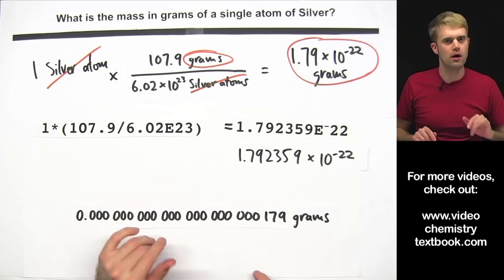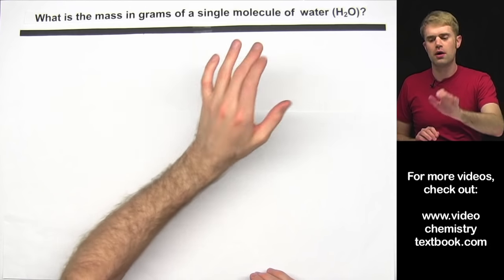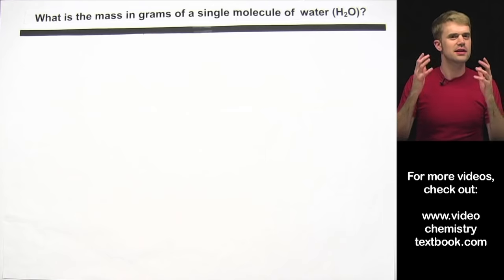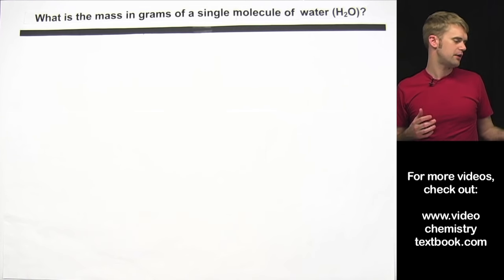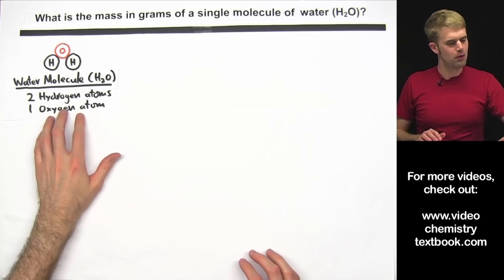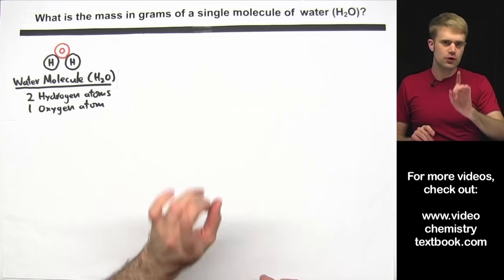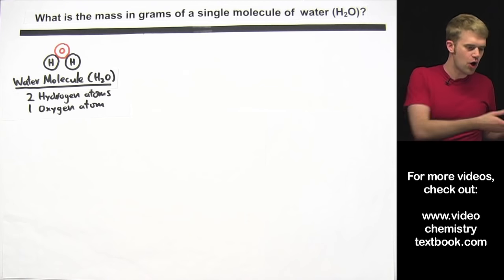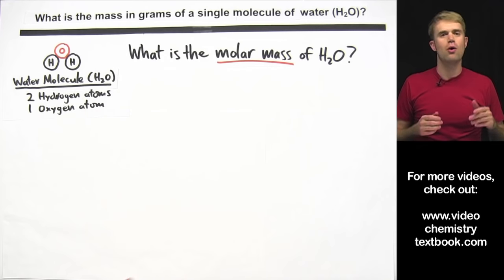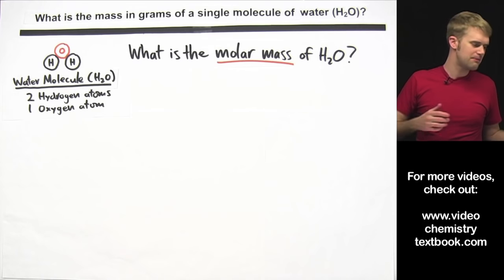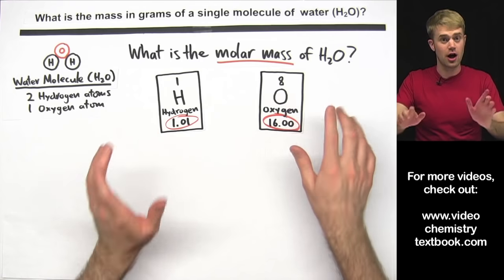Now let's look at how to do this with molecules instead of just atoms. What is the mass in grams of a single molecule of water? This is a lot like calculating the mass of a single atom, except there are just a couple of extra things to keep in mind. Here's a water molecule, H₂O — it's made up of two hydrogen atoms and one oxygen atom. The first thing we want to do is figure out the molar mass of H₂O. We look up hydrogen and oxygen on the periodic table.